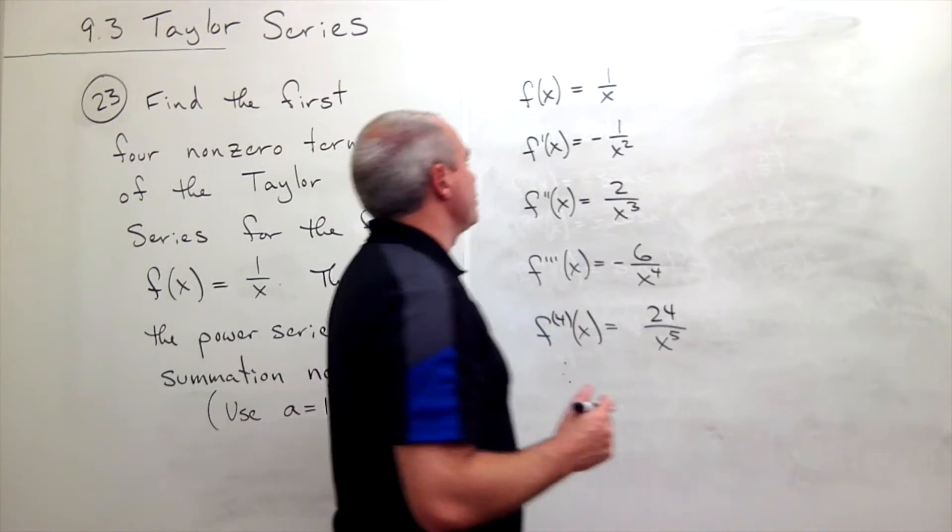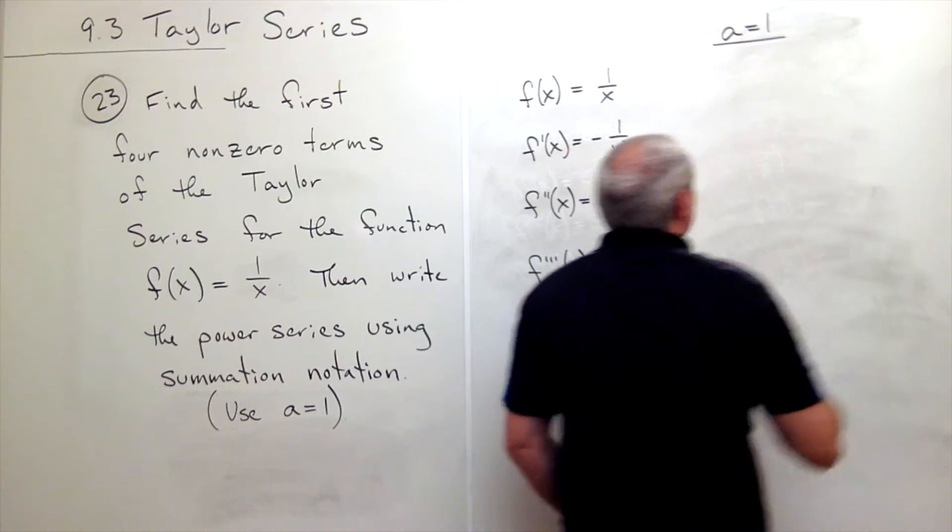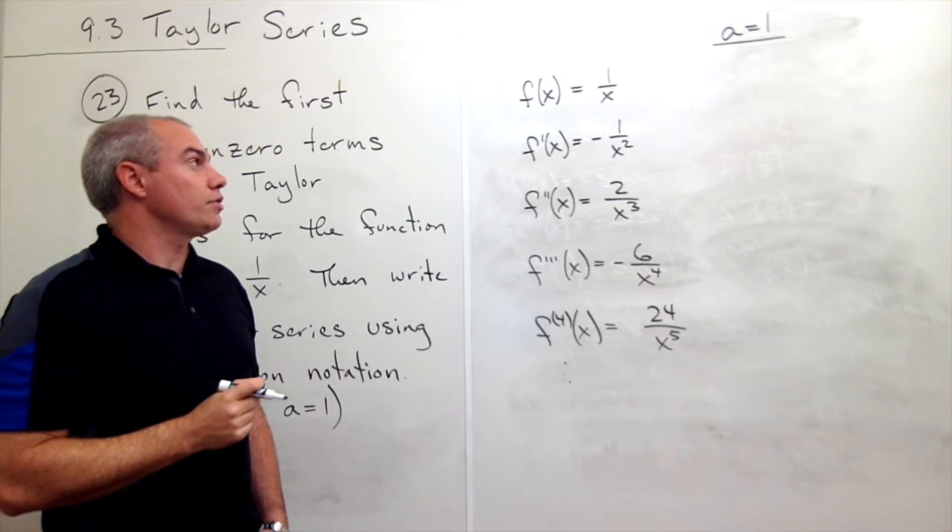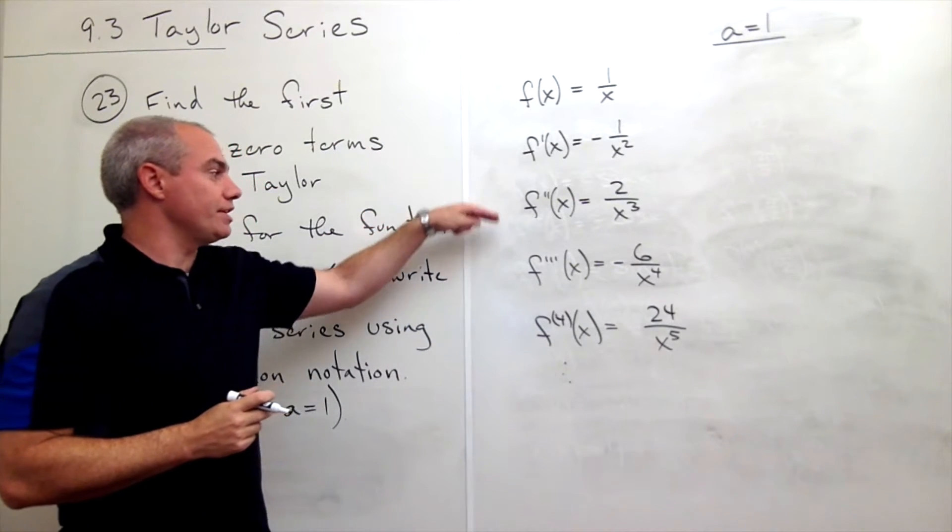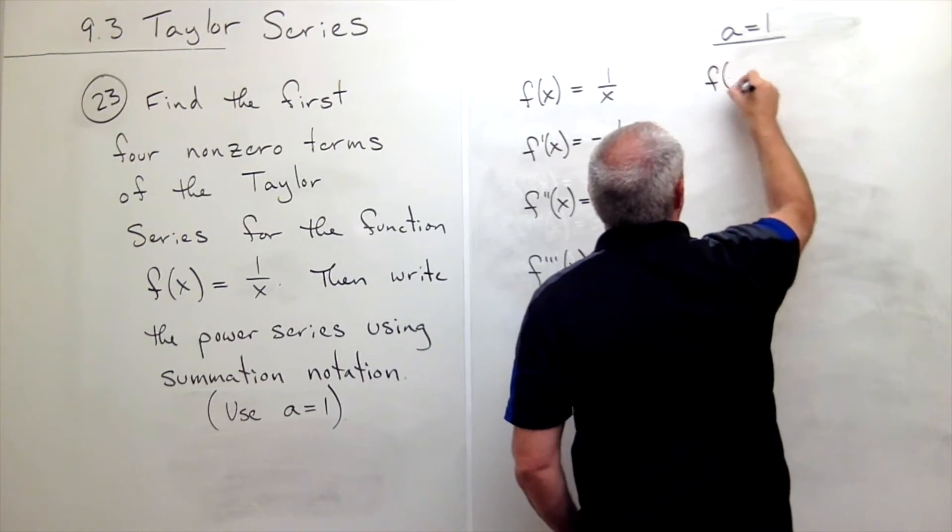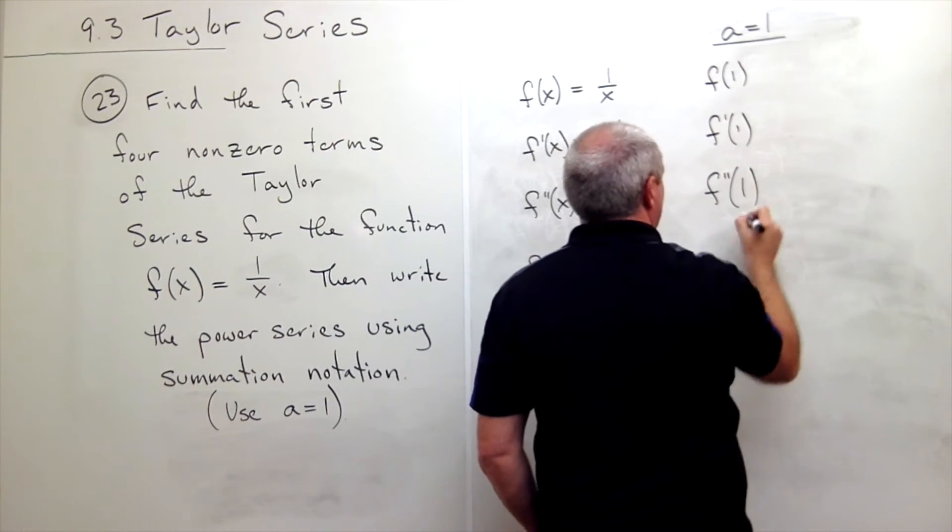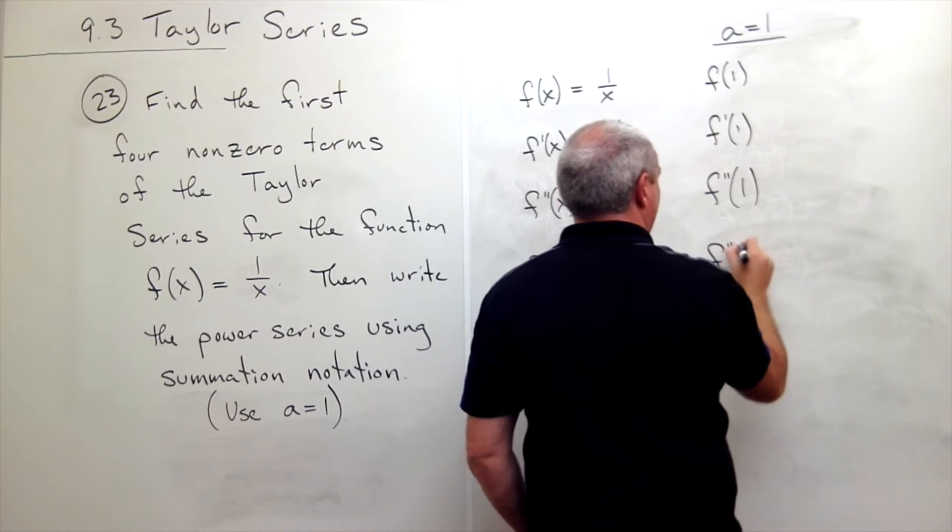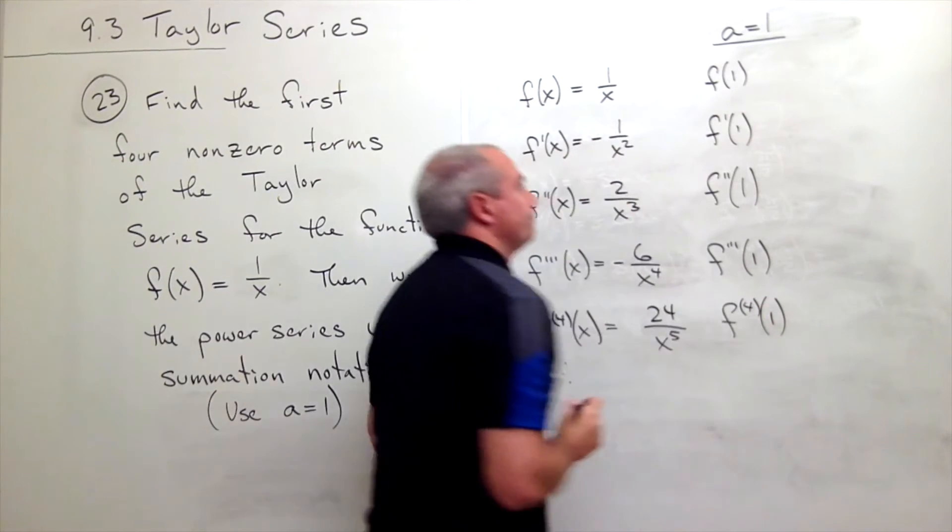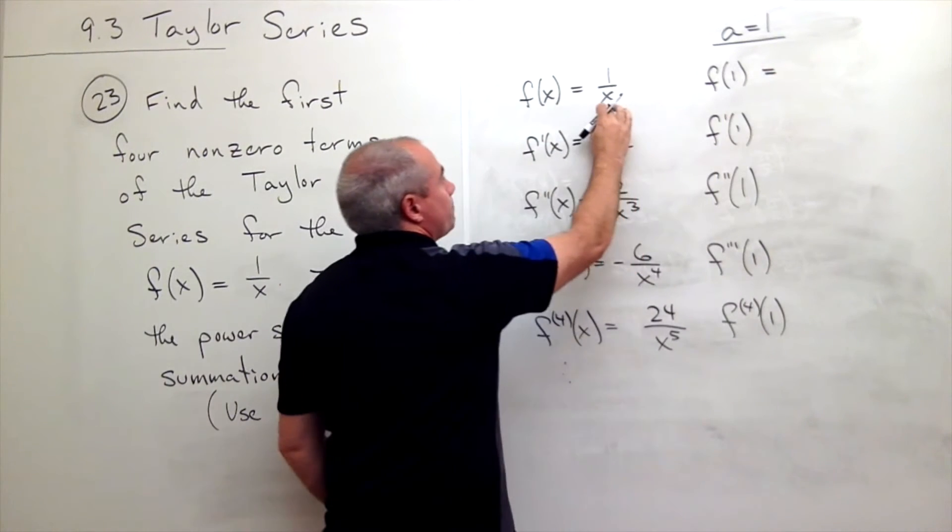All right, and now what I want to do is remember that in this case a, or the center of my power series, is equal to one. So I want to plug in one to each of these derivatives—the original and each of the derivatives. So I want to know what is f of one, what's f prime of one, what's f double prime of one, and what's f triple prime of one. Let's figure all these things out. f of one, I just plug in one to the original function and I get one.